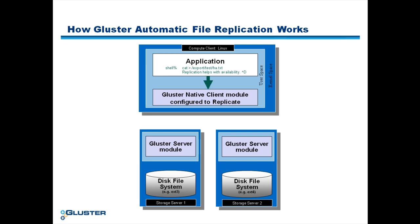The cluster native client module receives the file operation from the operating system kernel via the FUSE file system in user space module. It transmits the operation over the network, which could be a 1 gigabit, 10 gigabit, or InfiniBand with RDMA, to the two storage servers simultaneously.